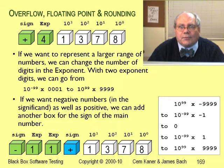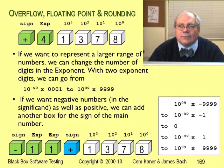For example, minus 1 tenth — the number you get if you subtract 1 from 0.9 — minus 1 tenth would be minus 1.0 times 10 to the minus 1.